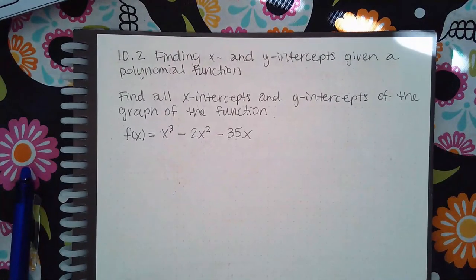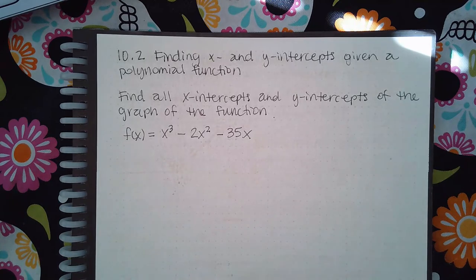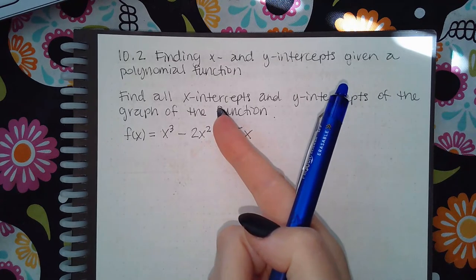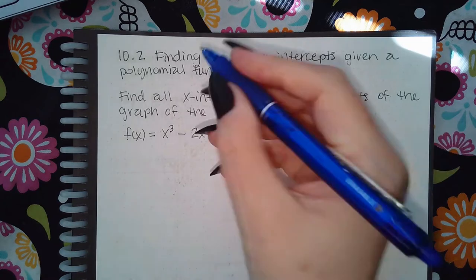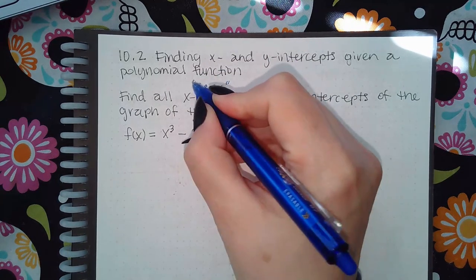Here we have 10.2, finding x and y-intercepts given a polynomial function. The x-intercepts is the harder part because that's the same as finding the zeros, which means you have to factor everything and then set each factor equal to zero.